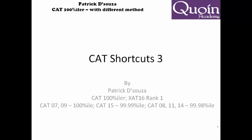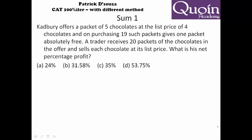Try to understand the sums. There is a packet of five chocolates sold at the price of four chocolates. So we purchase nineteen such packets, so one packet is free. The trader receives twenty packets and sells each chocolate at its list price. Here we have to find cost price and selling price.